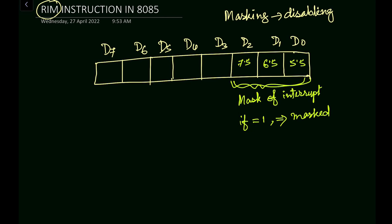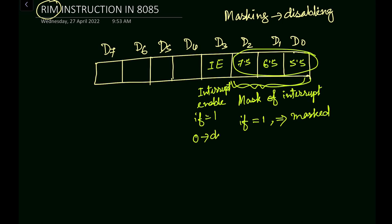Next we have IE at the D3 bit. IE means Interrupt Enable. If the interrupt enable bit equals 1, whatever interrupts are present — depending on the mask — those interrupts will be functioning. And if this equals 0, then it is disabled. So 0 means disabled, 1 means enabled — this is the interrupt enable bit at D3.